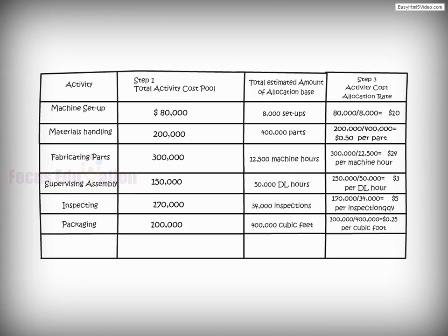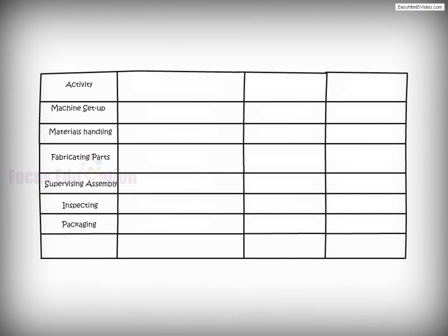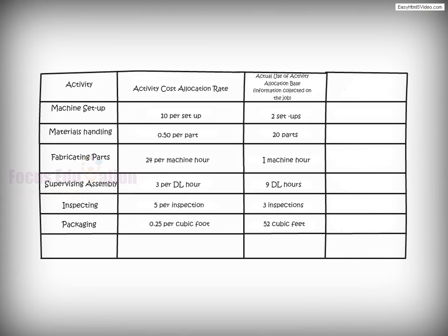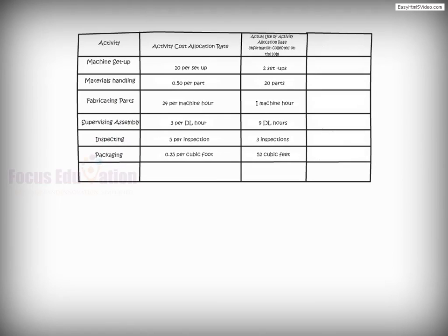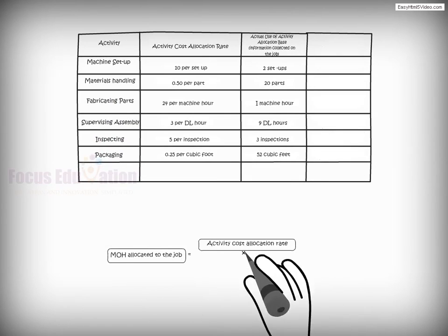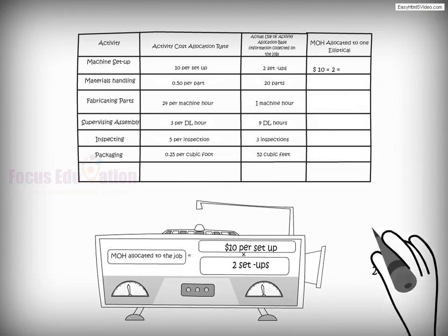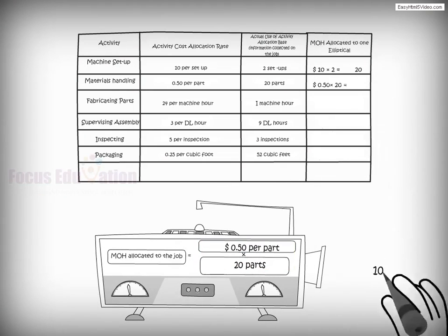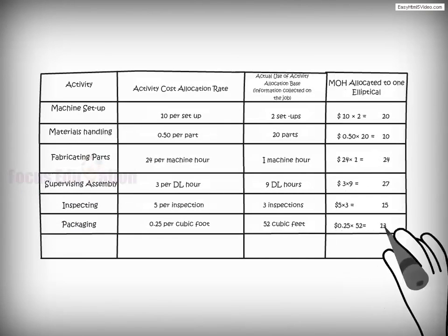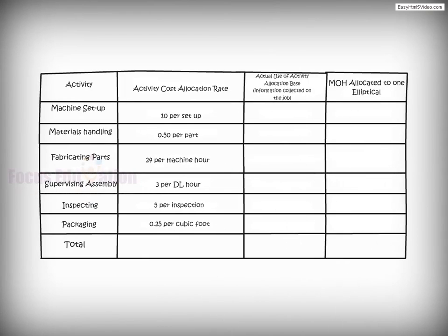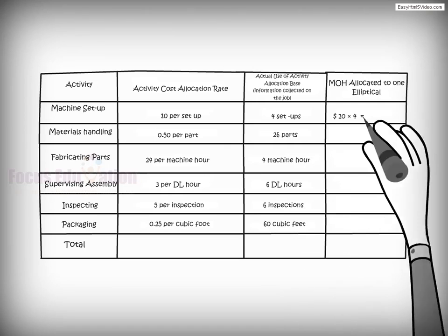Because these rates are estimated beforehand, the company uses them to allocate manufacturing overhead to specific jobs during the year. In the fourth and final step, Life Fitness allocates some manufacturing overhead from each activity to the individual jobs that use the activities. This is calculated by multiplying the activity cost allocation rate by the actual amount of activity allocation base used by the job. For example, the activity cost allocation rates help managers allocate manufacturing overhead to a job producing one elliptical, and likewise to a job producing one treadmill.